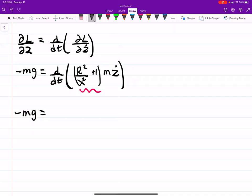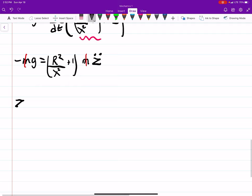And you're just going to get R squared over lambda squared plus 1 times m z double dot. You can divide out by the m's. And z double dot equals minus g divided by R squared over lambda squared plus 1. And that's our acceleration.